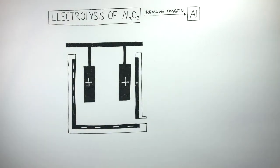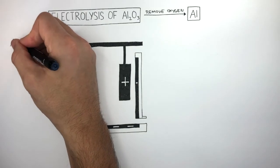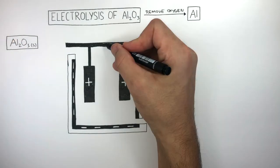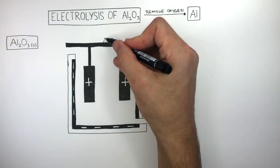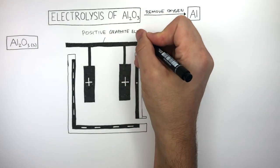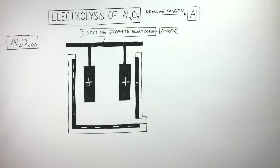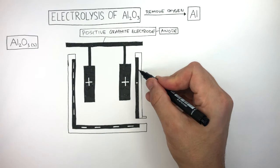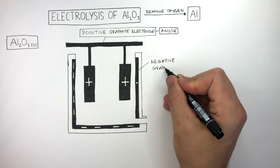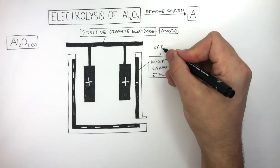Electrolysis uses electricity to break down the ionic compound Aluminium Oxide, which has the chemical formula Al2O3. Where you see the positive signs, this is the positive graphite electrode, known as the anode. And where you see the negative signs, this is the negative graphite electrode, known as the cathode.